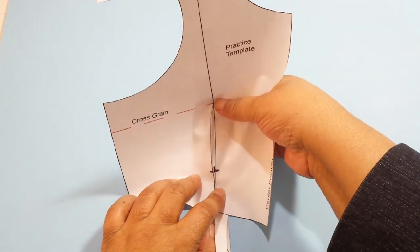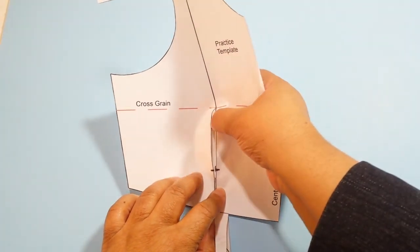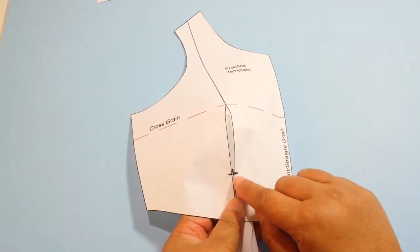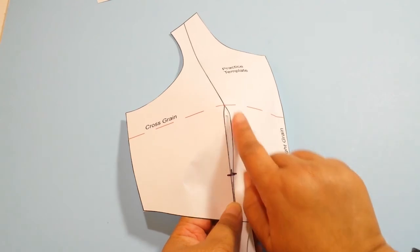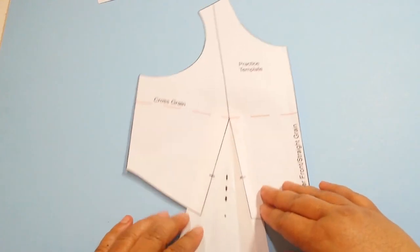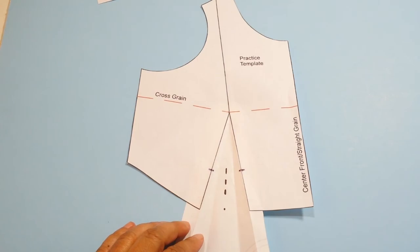And of course the paper is going to be stiff but on fabric it will look better than this. And if this were fabric you would sew to this marking here and the rest of this would be open. And this is how you would change a dart into a tuck.